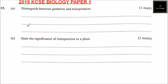Question number 15A. Distinguish between guttation and transpiration. Guttation is a process by which a plant loses water through the leaves in the form of droplets, while transpiration is a loss of water by a plant in the form of water vapor or moisture.